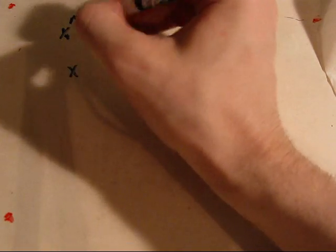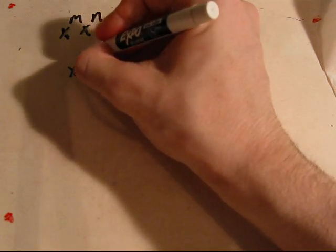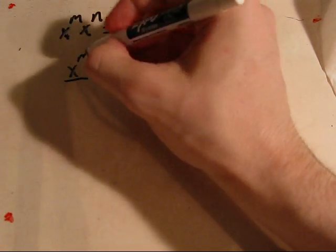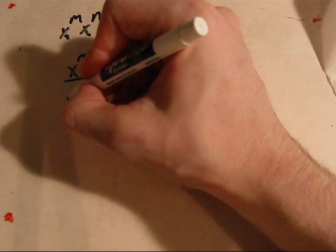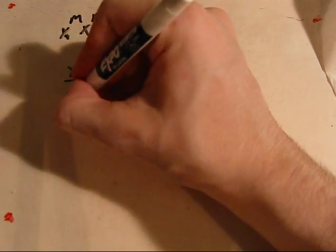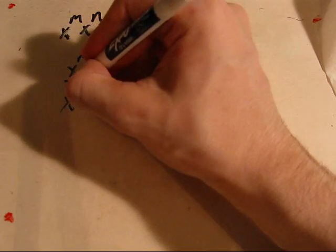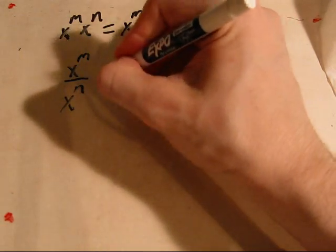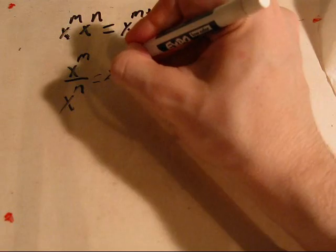If you've got an exponent of one base to an exponent, and another of the same base to another exponent, it becomes x to the m minus n power.